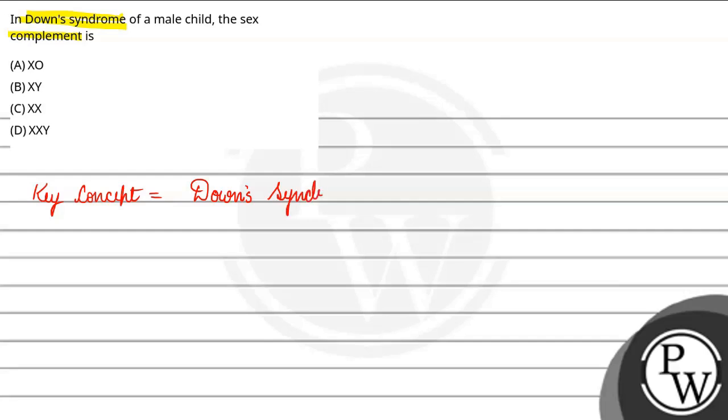Down syndrome has another name called Trisomy 21. What does Trisomy 21 mean? That the 21st chromosome, the 21st pair, you get to see 3 copies of a chromosome. These are the 3 copies of a chromosome.